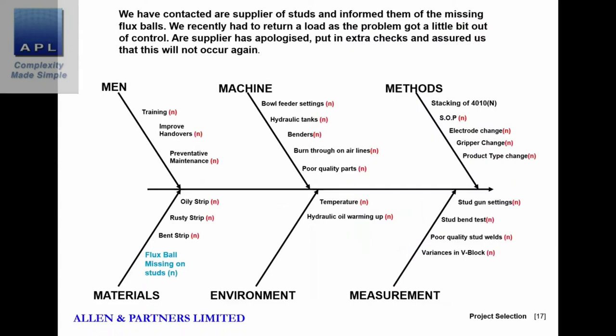Moving on, they've found a problem with another supplier. The studs come in pre-made and are supposed to have a flux ball sitting on the end for the welding process to work — but some of the flux balls are missing. This needs to be fed back to the supplier and sorted out. Previously, in all the chaos, they didn't know this was happening; there was so much rework to be done they had no time to discover it proactively. Now they've identified the flux ball as a problem.